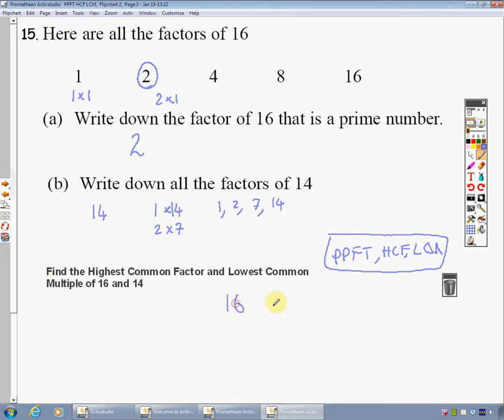And we draw a line underneath and to the left of those. I then look for a number that is a factor of both. Straight away I can say I've got a 2 there. And I write down 16 divided by 2 is 8. 14 divided by 2 is 7. Or, 2 times what gives me 16? It must be 8. 2 times what gives me 14? It must be 7.